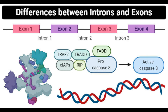Exons are present in all organisms ranging from jawed vertebrates to viruses. In the human genome, only 1% of the total genome is formed of exons, while the rest is occupied by introns and intergenic regions. Sometimes, some introns are converted into exons by the process of exonization. Exons are crucial in protein synthesis as they are regions carrying codons that code for various proteins. The presence of exons and introns allows the process of alternative splicing, which increases the variety of proteins produced from a single gene.